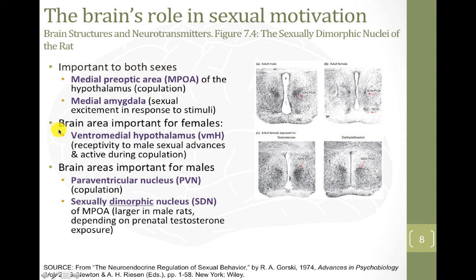Looking at other areas in the hypothalamus, there are regions specifically important for each sex. For females, the ventromedial hypothalamus, or VMH, is involved in receptivity to male sexual advances and is also active during copulation. In males, the paraventricular nucleus, or PVN — also part of the hypothalamus — is involved in copulation. And remember, the sexually dimorphic nucleus is larger in males than in females.